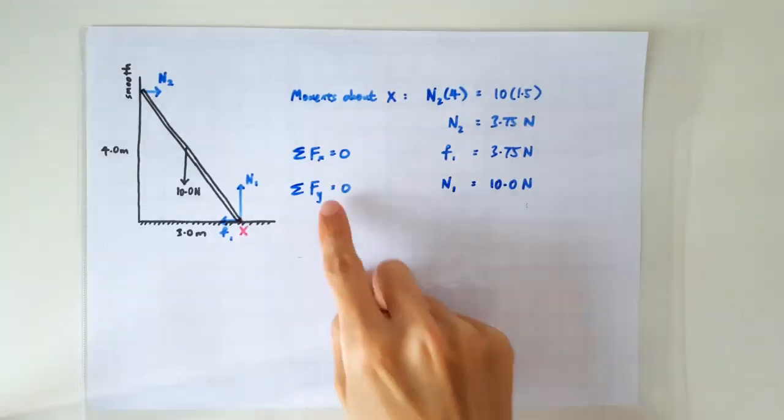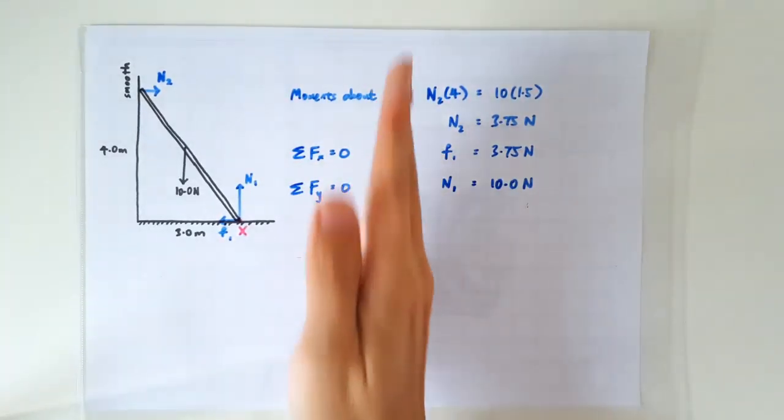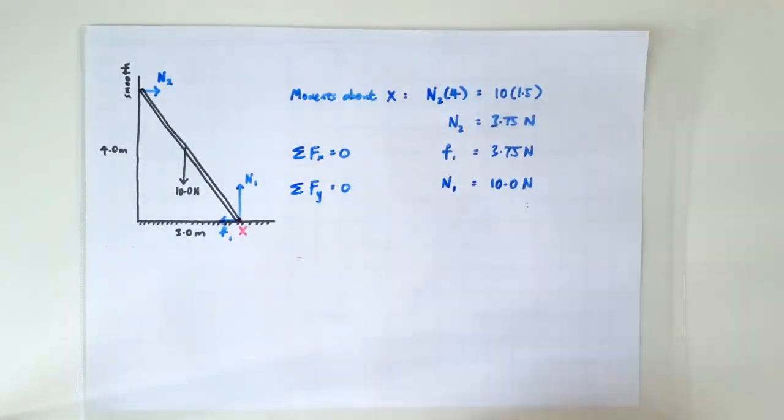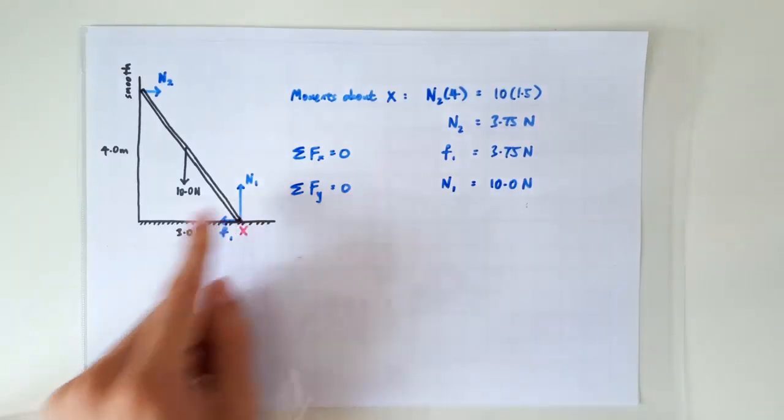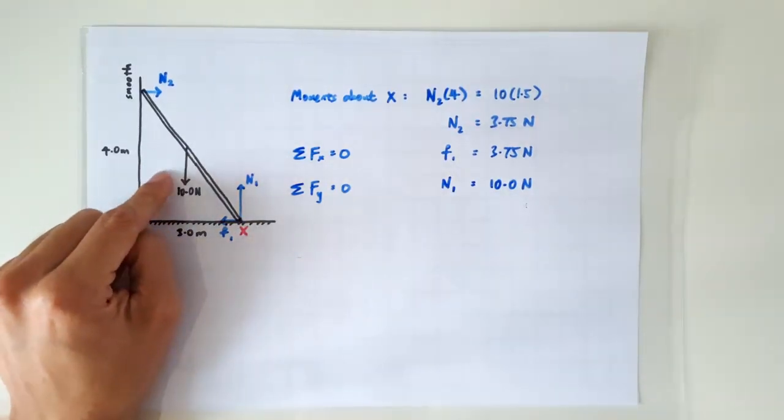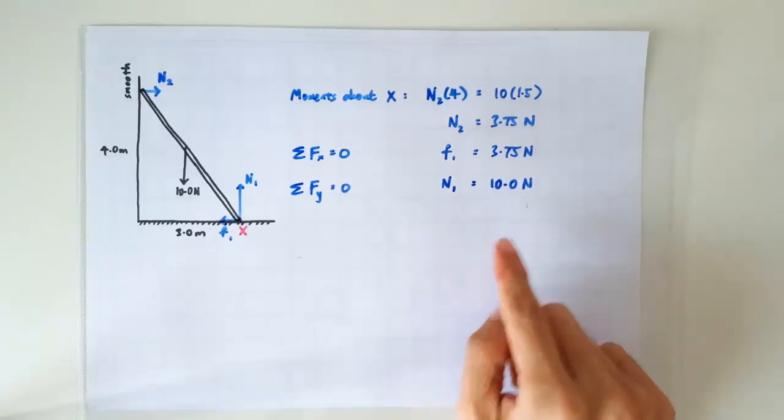Of course, vertically, all the upward forces must be balanced by all the downward forces. So we have the upward N1, which must be balanced by the downward weight, which is 10 newtons. So N1 is 10 newtons.